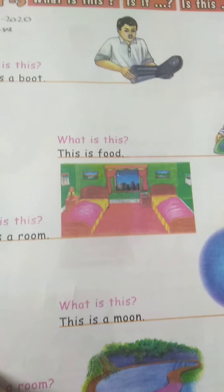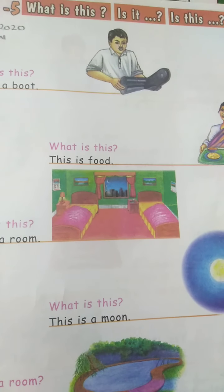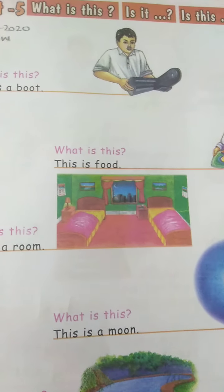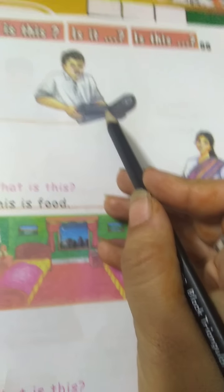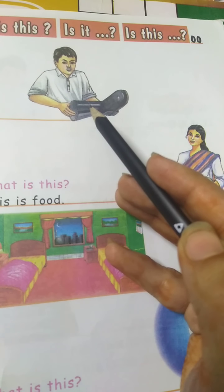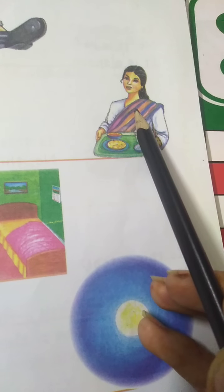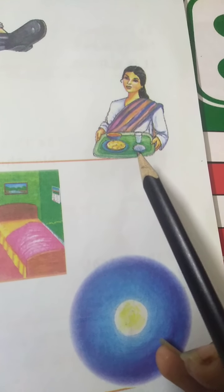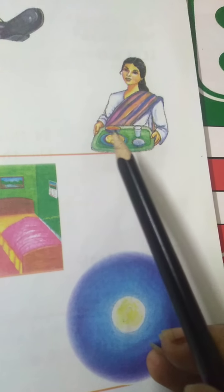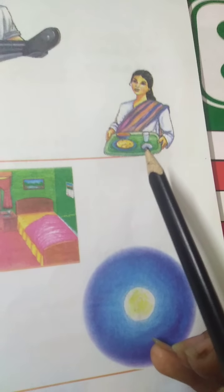Let's start. First, you have to look at the picture — is it correct or wrong — and then give the answer. Now see, what is this in the hand of the man? This is a boot. And what is this in the hand of the woman? She has food in the tray — this is food.